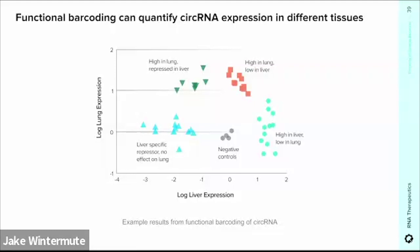Here is an example from one such screen where the expression from different promoters is profiled across different tissues. Some promoters shown in dark green are highly expressed in the lung but are delivered lower than control in the liver. Analogously, we can use the same method to characterize both biodistribution and functional expression from different LNPs across relevant organ systems or cell types — for example, de-targeting the liver is often an important part of developing some of these non-viral gene therapies.